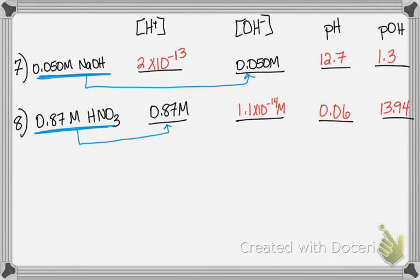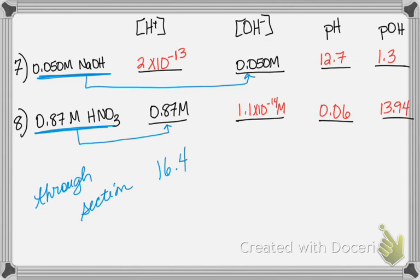That takes us through section 16.4 of the book and the first eight problems on the worksheet. In lecture 2, we'll finish problems 9, 10, and 11 when we start working on weak acids and weak bases. In the meantime, you can begin working on Connect assignments while you wait for the second lecture.